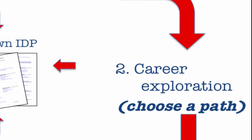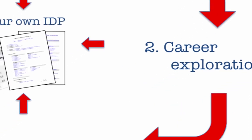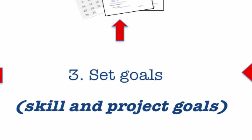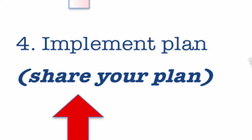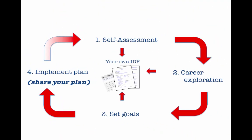Career exploration is the next step. In this phase, you'll learn about a wide variety of careers based on your assessments, and make a best decision about which direction to head in. Then you'll set goals. Setting research goals can help you finish your training, and set skill and project goals to make progress in your career and professional development. Then you'll implement the plan. Share your goals with your mentors and colleagues, and then repeat this process again next year.